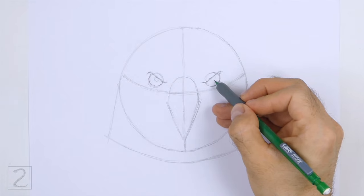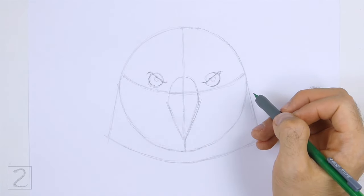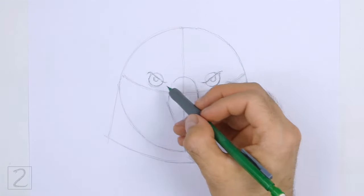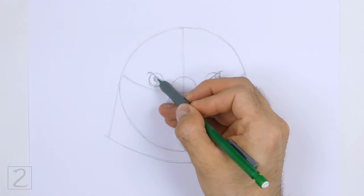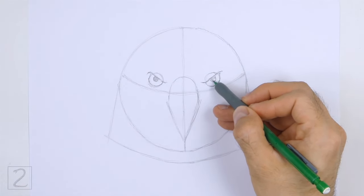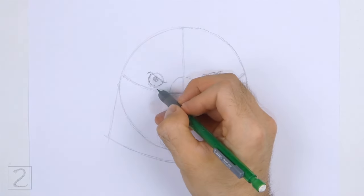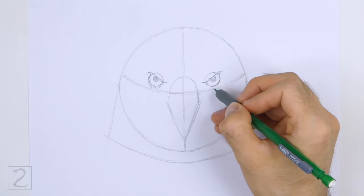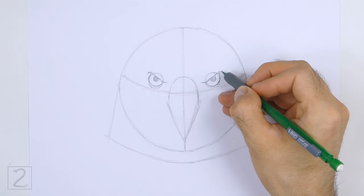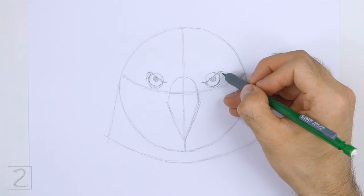Inside each eye, draw a tiny circle for the pupils. Shade in the pupils. The tops of the pupils will be hidden behind the top edges of the eyes. Draw a couple of curved lines around the eyes for creases.